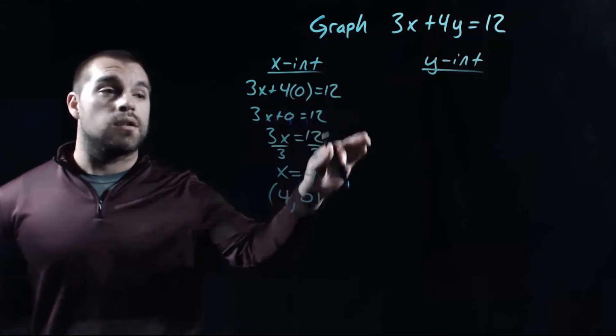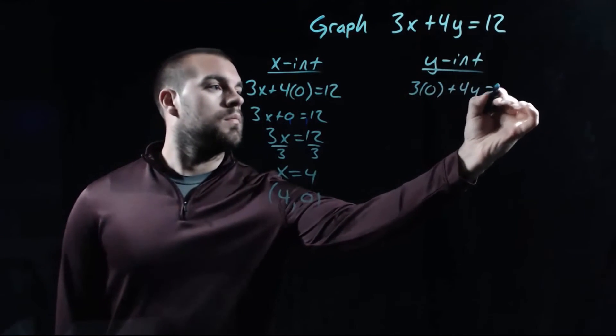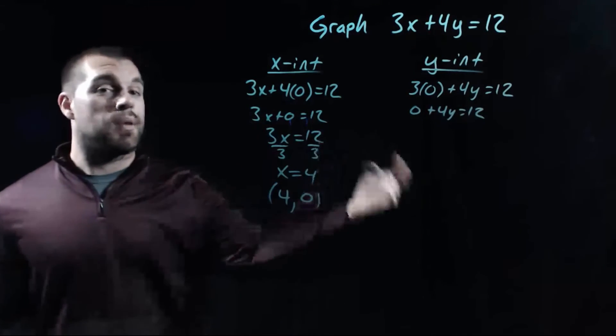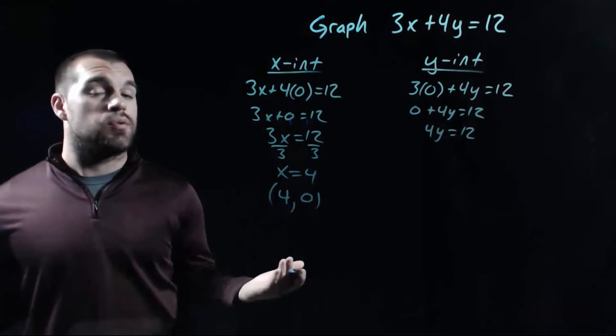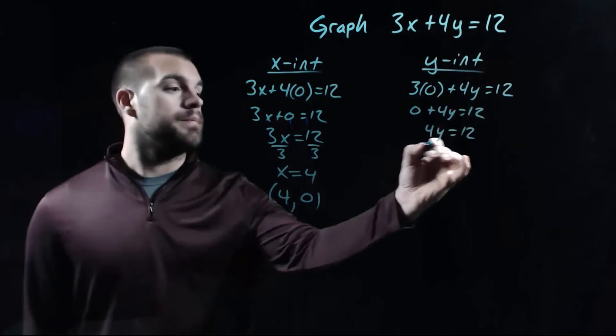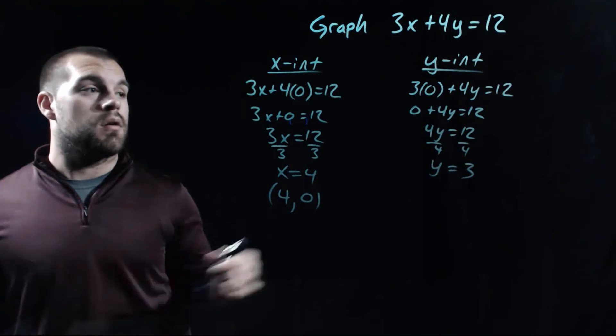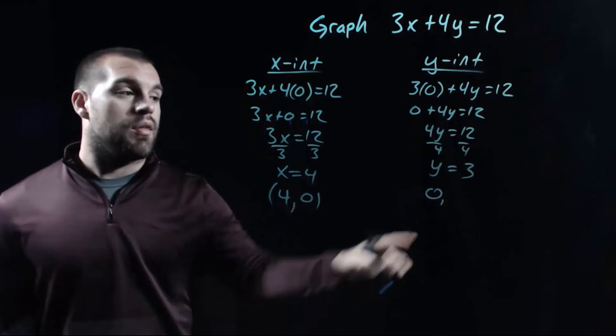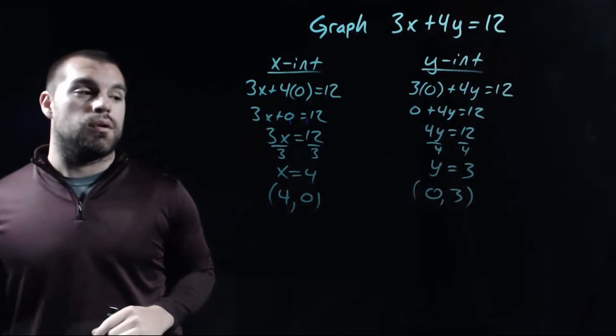Now, for finding the y-intercept, we said we were going to plug in a zero for our x. So three times zero is zero. Zero plus 4y is still 4y. And in order to solve this one, we're going to divide each side by four. So we get y equals three. And again, we can write this as an ordered pair. The x value that we plugged in was zero, and the y value that we got was three. So that's the point (0, 3).